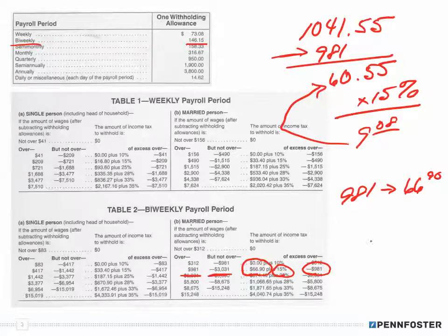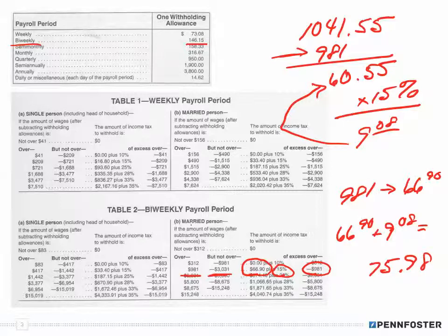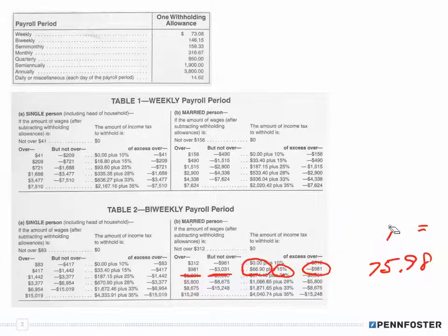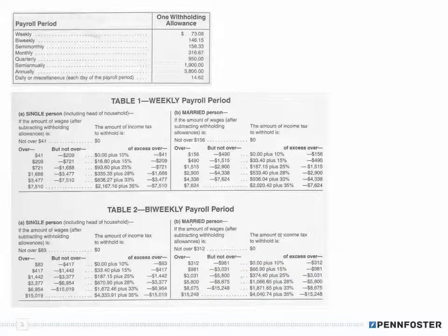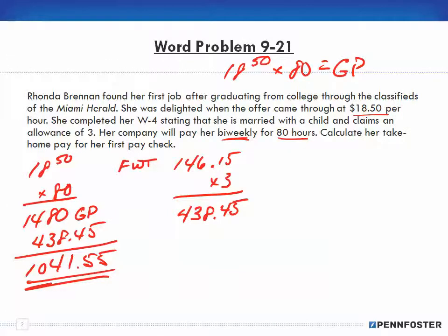To figure out our total withholding, we take $66.90 and add $9.08, giving us $75.98 in federal withholding tax. If you need to pause the video, go back over that. If you have additional questions and don't understand something, feel free to telephone and speak with an instructor or contact us via email. So for federal withholding tax, we're going to withhold $75.98.